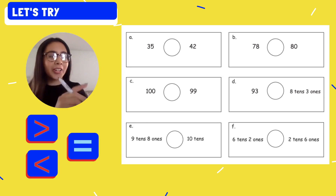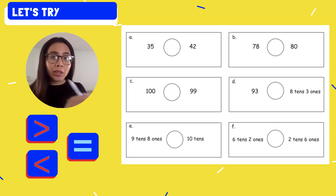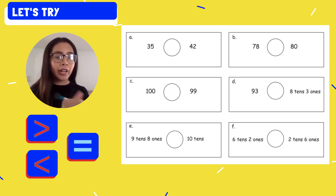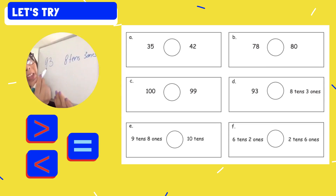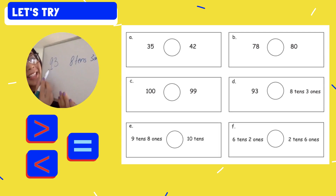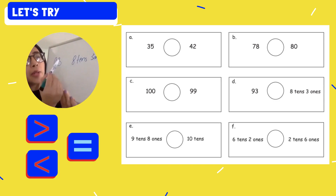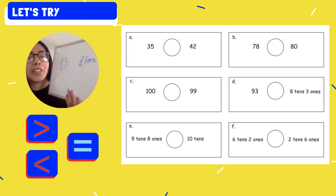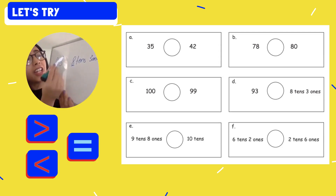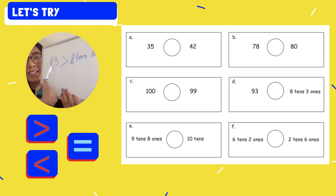And now let's do letter D. Letter D looks a little different, but we can still figure it out. We have 93 and we're comparing it to eight tens and three ones. We talked about our place value — I know that 93 tells me there are nine tens and three ones. So on both sides we have the same number of ones, but here we only have eight tens and here we have nine tens. Nine is definitely greater than eight, so I want to use my greater than symbol.